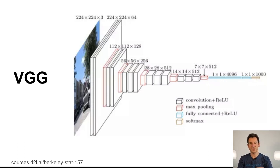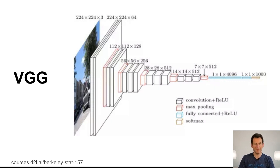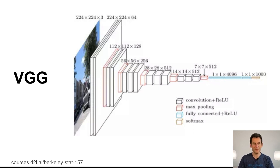The next step in the design of convolutional neural networks came in the form of VGG. VGG stands for the Visual Geometry Group in Oxford. They looked at progress in computer vision, read the AlexNet paper, and thought: if AlexNet improved on LeNet by being bigger and better, why not make it even bigger and better to win more competitions? And that's exactly what happened with VGG.